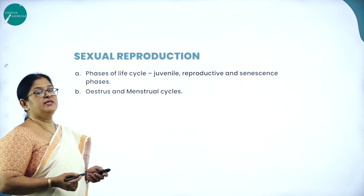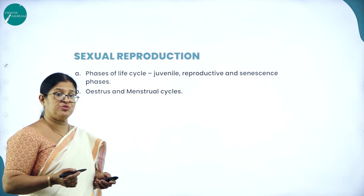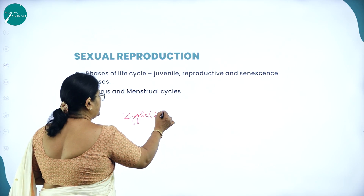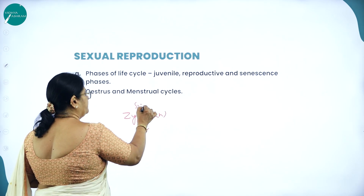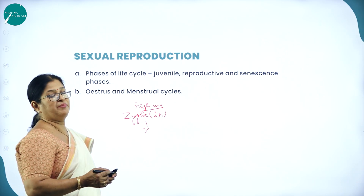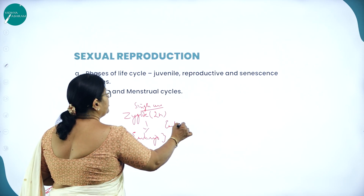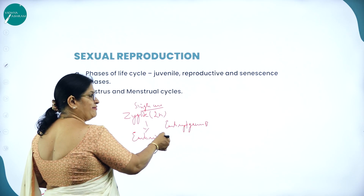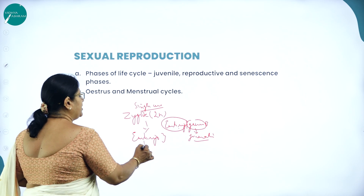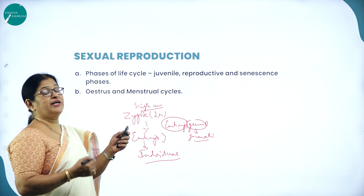Sexual reproduction involves two parents of opposite sex, giving rise to a diploid single cell called a zygote after fertilization. We all started life as a single cell. This zygote undergoes a series of mitotic cell divisions to become a multicellular embryo. The process of development of a zygote into an embryo is called embryogenesis. This embryo will later become an individual — one capable of leading an independent life.